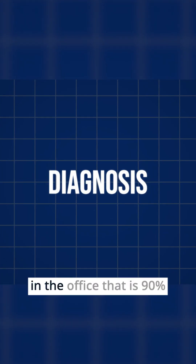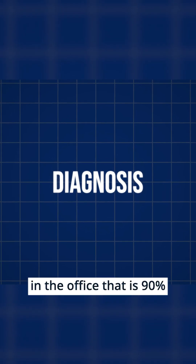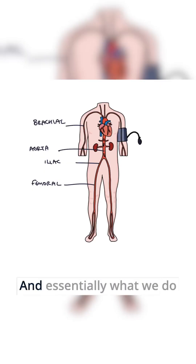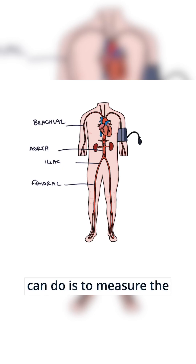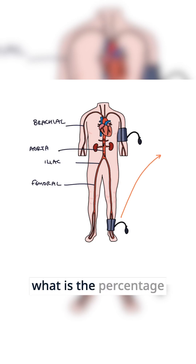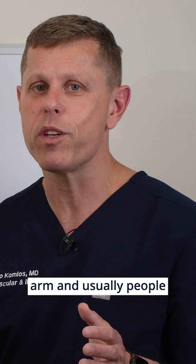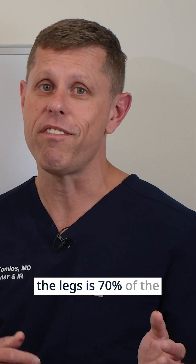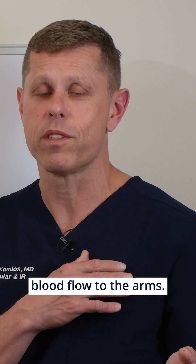We can do a simple test in the office that is 90% effective in diagnosing PAD, which is called an ankle-brachial index. Essentially what we do — and actually any physician can do — is measure the blood pressure in the ankle and compare it to the blood pressure in the arm. You can see what percentage of blood flow is going to the legs compared to the arm. Usually people start developing claudication when the blood flow to the legs is 70% of the blood flow to the arms.